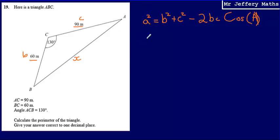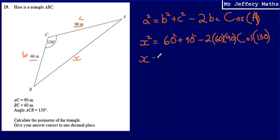So just substituting in here, I can say that, and let's call it x squared, the length that we're trying to find, x squared is going to be equal to 60 squared plus 90 squared minus 2 multiplied by 60 multiplied by 90 multiplied by cos 130. So that will tell us what x squared is going to be. To figure out what x is going to be, what this missing length is going to be, I just need to square root that answer.